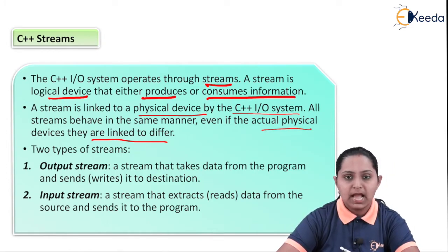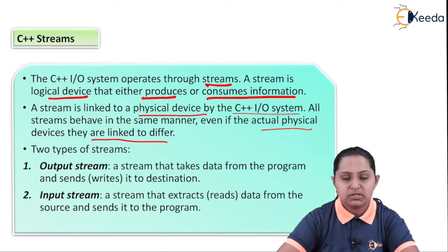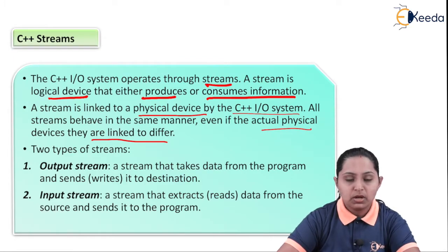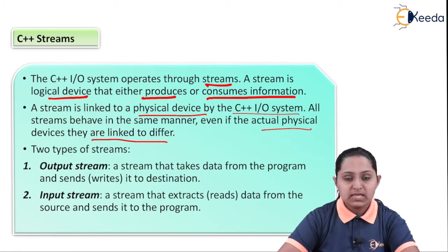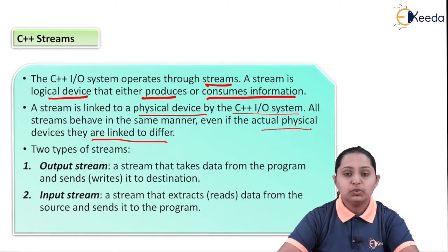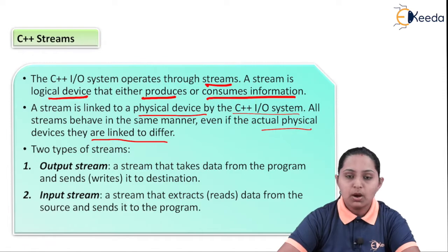There are basically two types of streams: output stream and input stream. When we say output stream, that stream is used to perform a write operation on your file. When we say input stream, that stream is used to read something from the object.